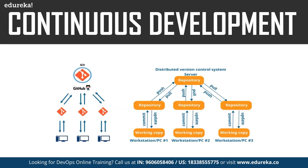Tools such as Ant, Maven, and Gradle can be used for building or packaging the code into an executable file so that it can be forwarded to the next phases. Tools like Git enable communication between the development and operations teams, which was one of the drawbacks of the previous agile model.